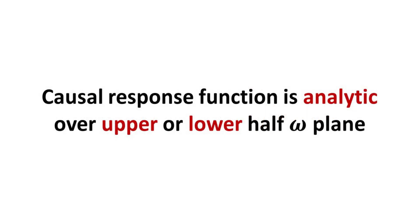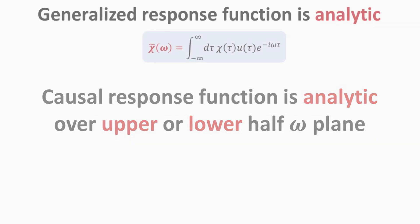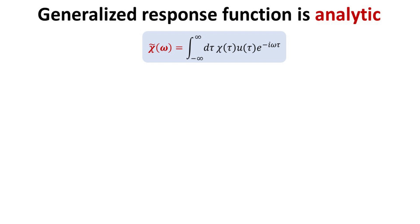Part 3. Causal response function is analytic over upper or lower half omega plane. Now, we are ready to prove that the generalized response function, chi tilde, is an analytic function. We shall exploit the step function ut and perform integration only for positive tau. We note that this step is crucial for the function to be analytic.